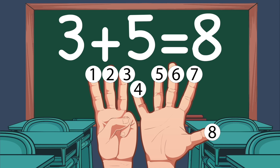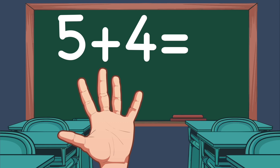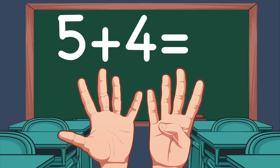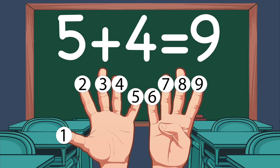Let's do another example: 5 plus 4. On our left hand, we show 5 fingers. On the right hand, we show 4 fingers. Now we count the total number of fingers: 1, 2, 3, 4, 5, 6, 7, 8, 9. So 5 plus 4 equals 9.